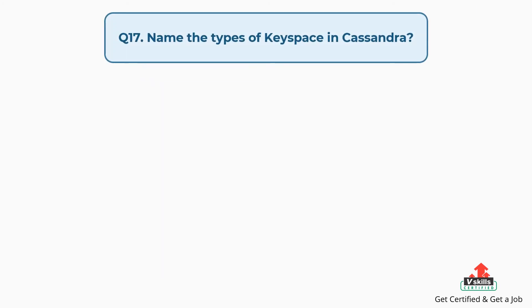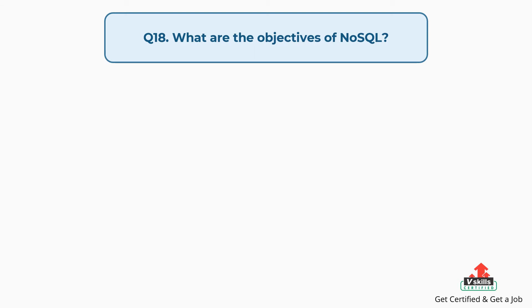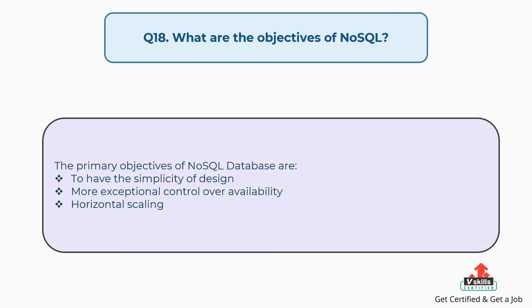Question number seventeen: Name the types of keyspace operations in Cassandra. Cassandra keyspace contains three types of operations: Create keyspace, Alter keyspace, and Drop keyspace. Question number eighteen: What are the objectives of NoSQL? The primary objectives of a NoSQL database are to have the simplicity of design, more exceptional control over availability, and horizontal scaling.